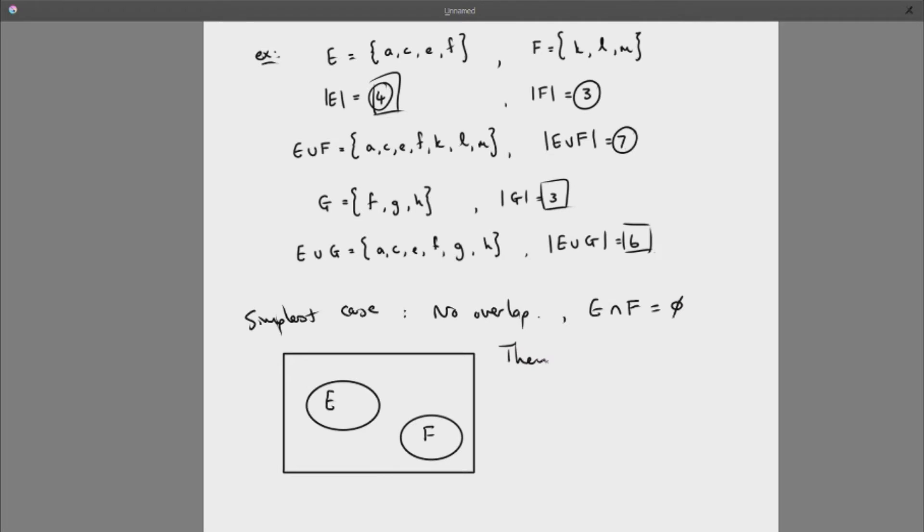Then if I am interested in the number of elements that I would have if I throw them together, it's as simple as looking at the number of elements in each one and adding them together. Count each circle separately because they are very much separate. If they are just two separate collections, then if I want to know how many there are in total, which is the union really, then it's as simple as adding them up separately.